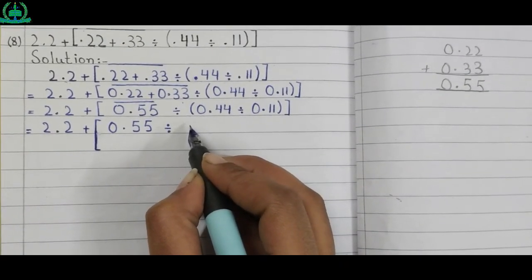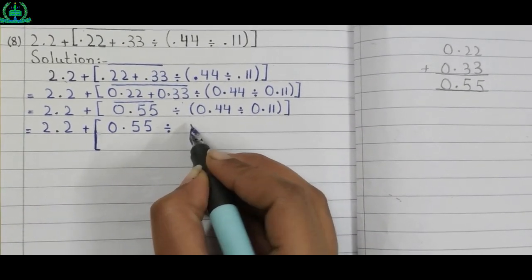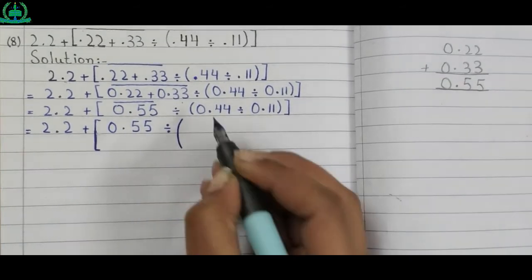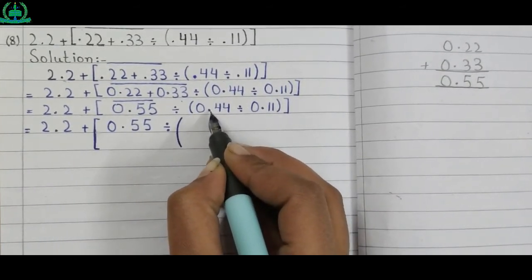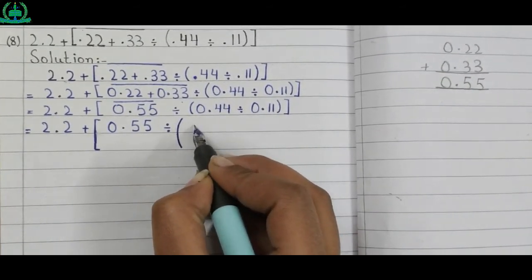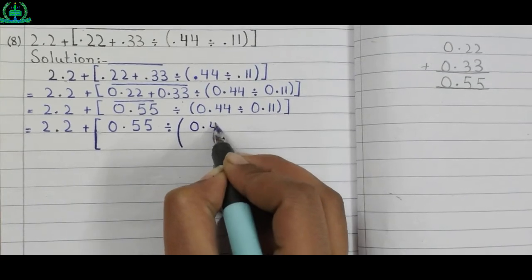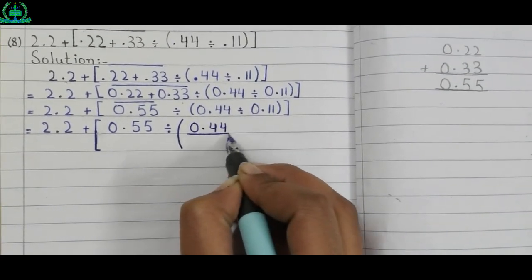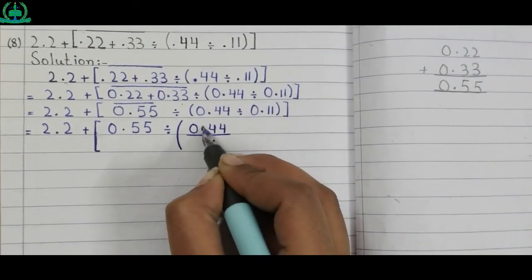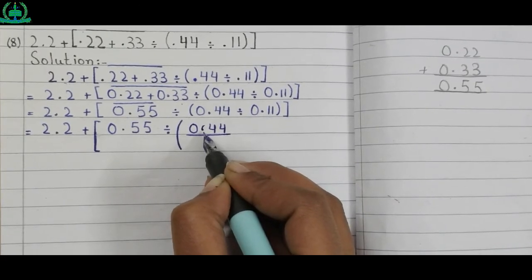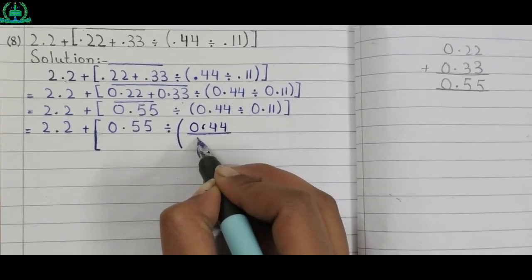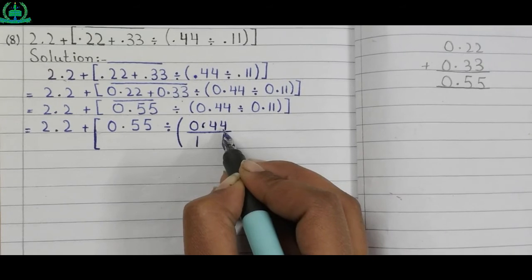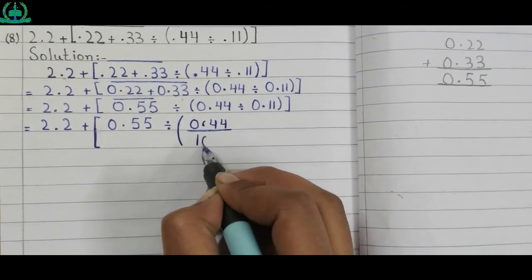Remaining part of the question as it is. To divide, first we remove the decimal. When we remove the decimal we put one in the denominator — there are two digit places after the decimal, so we put two zeros after one.